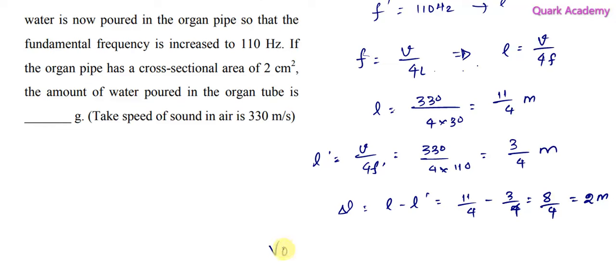Now we can find volume of water. Volume of water is given by cross-sectional area of the pipe into change in length. Cross-sectional area is 2 centimeter square. I want to write it in meter square, so 2 into 10 power negative 2 square meter square into 2 meter. So you will get 4 into 10 power negative 4 meter cube. This is the volume of water.